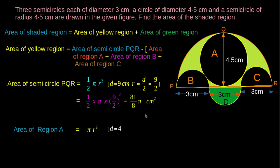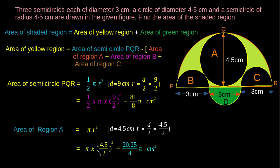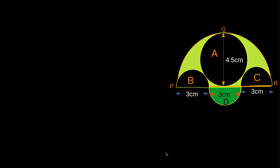Area of region A is equal to π R². Here, D is equal to 4.5 cm, so R is equal to 4.5/2. Therefore, area of region A is equal to π × (4.5/2)² = 20.25/4 π cm².